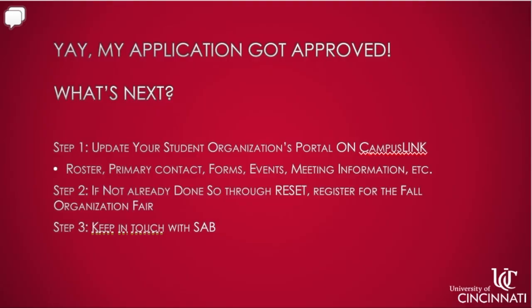What's next? First, update your student organization's portal on Campus Link, including your roster, primary contact, forms, events, meeting information, etc. Through RESET, you should have had an opportunity to RSVP for the Fall Organization Fair. If you wish to make edits to your RSVP, you can reach out to SAB. Lastly, keep in touch with SAB for opportunities to spotlight your organization or attend one of our annual events.